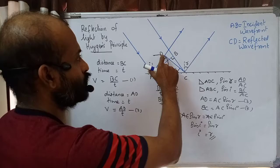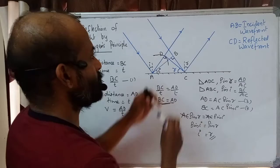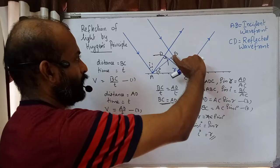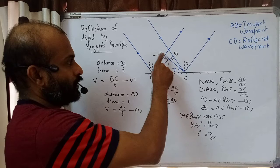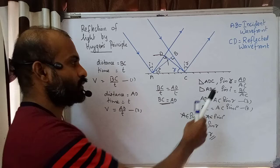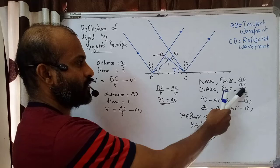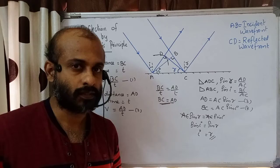To summarize the construction: we have two incident light rays with incident wavefront AB. Point A strikes the mirror surface first; from B, wavelets need to travel distance BC. Within that time, wavelets from A reflect and travel to D, so BC = AD. Taking length V×T, we draw a sphere at A, then draw a tangent from C to the sphere to get the reflected wavefront CD. From the two right-angled triangles, AD = AC sin R and BC = AC sin I; equating gives I = R.